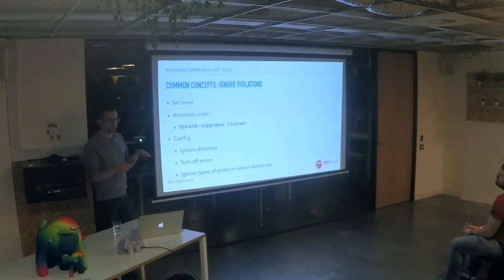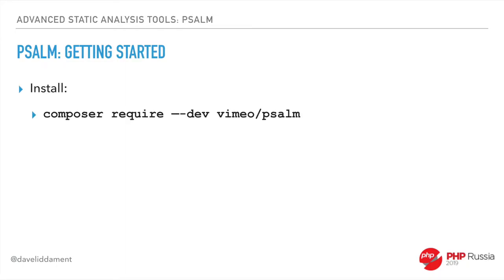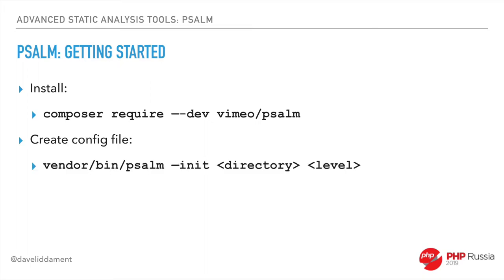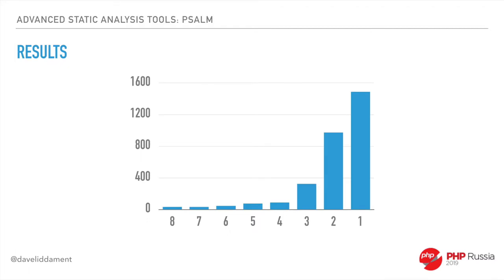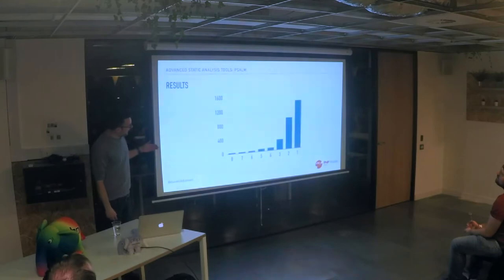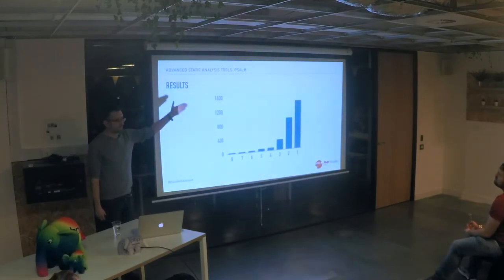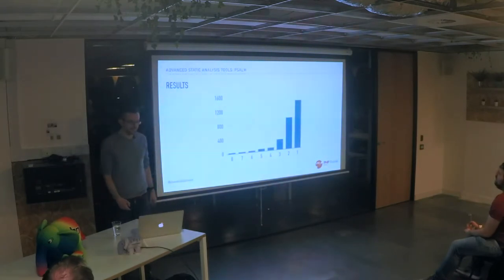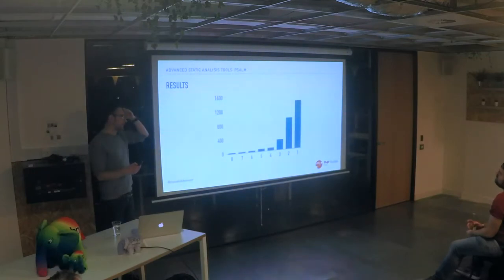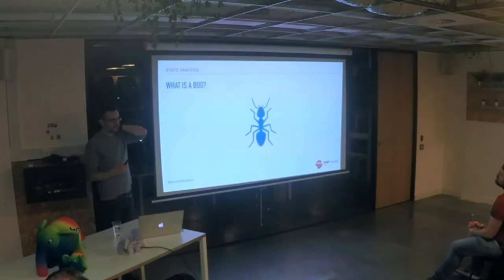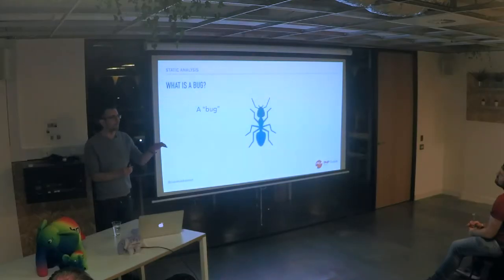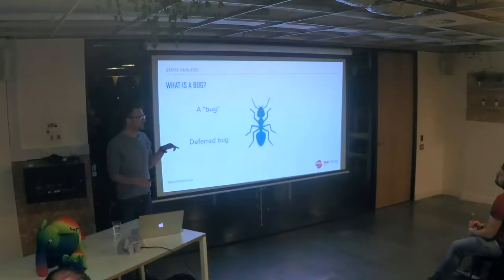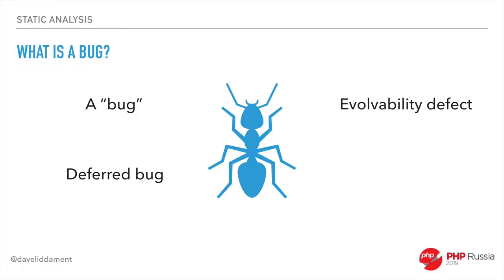Let's look at getting started with Psalm — what I say here is equally applicable to the others with slight differences. You install Psalm, create your config file, and run it. In reality, when you first see the results you'll probably cry, especially on a high level. On some code I was working in — not a huge codebase — level 8 is Psalm's least strict level, level 1 is its most strict, and it found one and a half thousand issues. Looking at these, I categorized them into: genuine bugs, deferred bugs, evolvability defects, and false positives.